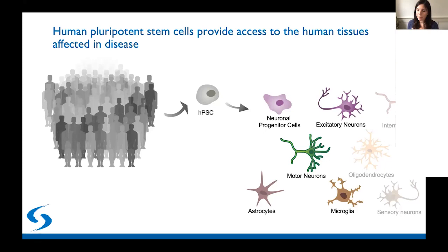I cannot stress how important scalability and reproducibility are. There are also approaches to make other cell types such as interneurons and oligodendrocytes, but most of these produce heterogeneous cell populations, which makes them very hard to work with if you're studying cells from many different people. Today we will also not be discussing organoid or three-dimensional approaches where many cell types are present in one organoid—you will hear about those from Paola Arlotta and her colleagues. Instead, today you will hear about specific cell types.